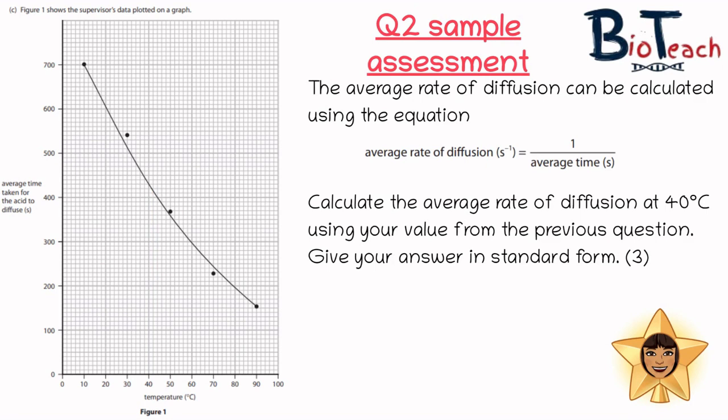The second part of the question asks you about the average rate of diffusion and actually gives you a calculation. The average rate is calculated by one over the average time, and it says calculate the average rate of diffusion at 40 using your value from the previous question and give your answer in standard form. Now quite generously they've offered three marks for this. One mark for the calculation of one over the average time, another mark for saying what the decimal answer would be, and then a third mark for being able to convert that into standard form. So the answer should be one divided by 420 and that would give you 0.00238558 at the end, and so I've rounded that up to 0.00233, and then I've converted that into standard form so that becomes 2.33 times 10 to the minus 3.